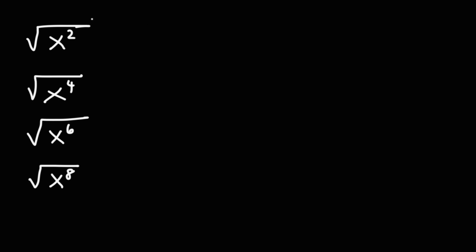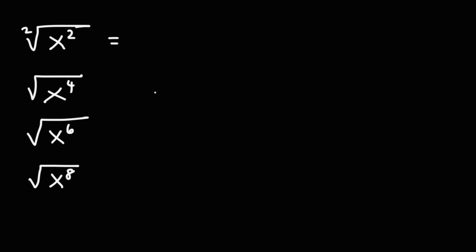Now for these problems, we don't see an index number. If you don't see an index number, it's assumed to be two, so it's even. The square root of x squared — we divide the exponents: two divided by two gives us one, so we get x to the first power. We started with an even index and now we have an odd exponent as a result. Therefore, we need to use the absolute value symbol. So the answer is the absolute value of x.